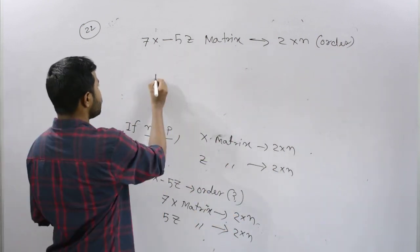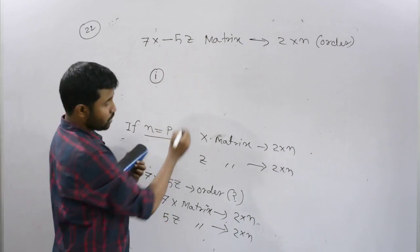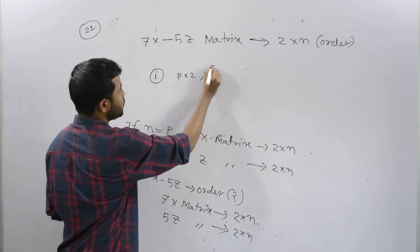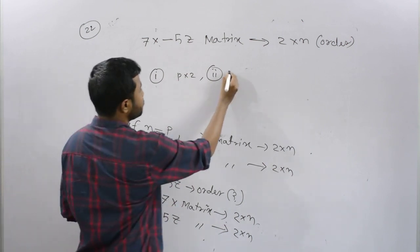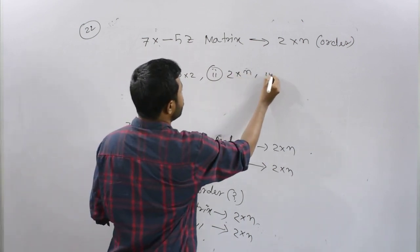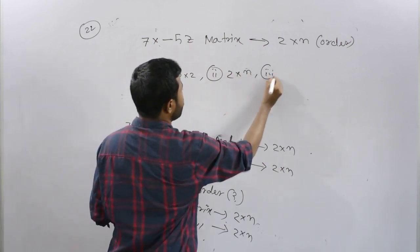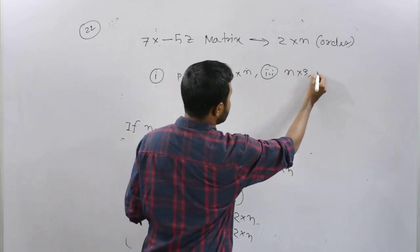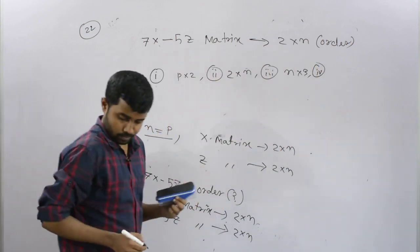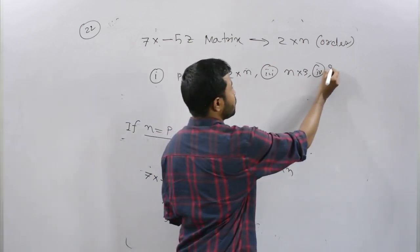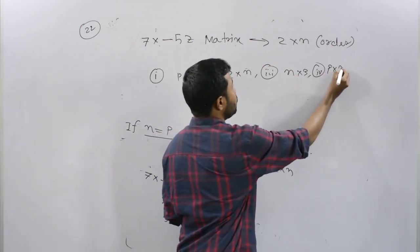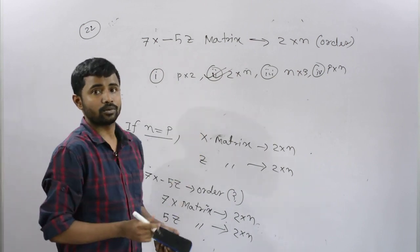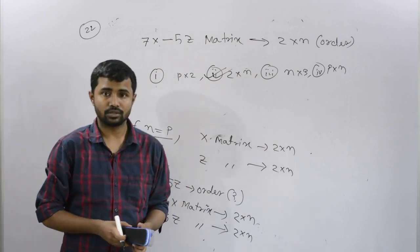The options are: option F is p into 2, option Q is 2 into n, option 3 is 2n into 3, option 4 is p into n. The correct answer is 2 into n. So the second option is correct.